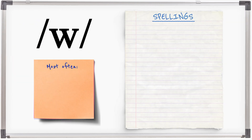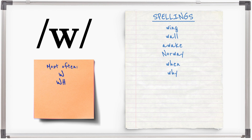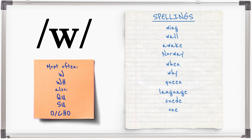W is normally spelt with a W: wing, wall, awake, Norway. Or W-H: when, why. It also appears in words spelt Q-U: queen. And sometimes G-U: language. And S-U: suede. It's also the O in 'one' and derivative words.